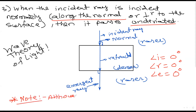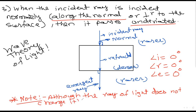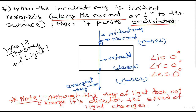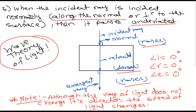Note: although the ray of light does not change its direction, the speed of light does change. When going from rarer to denser the speed decreases, and from denser to rarer it increases, but there is no deviation in direction.